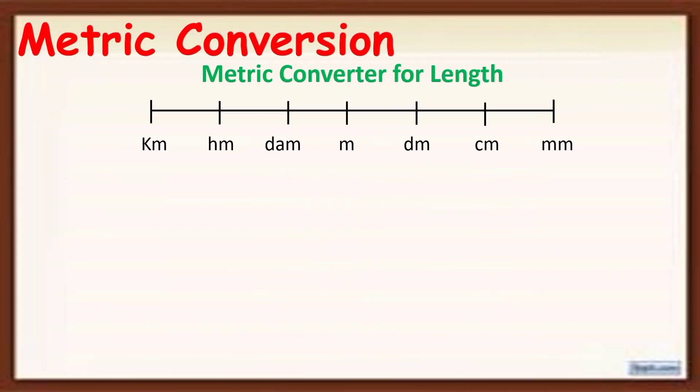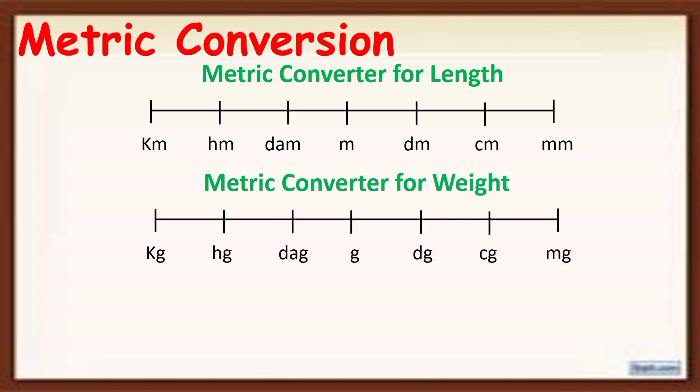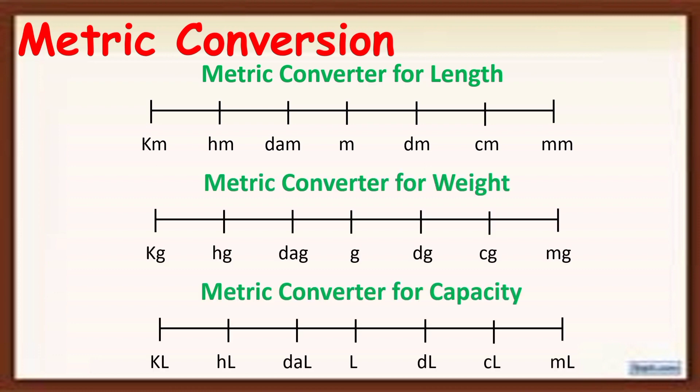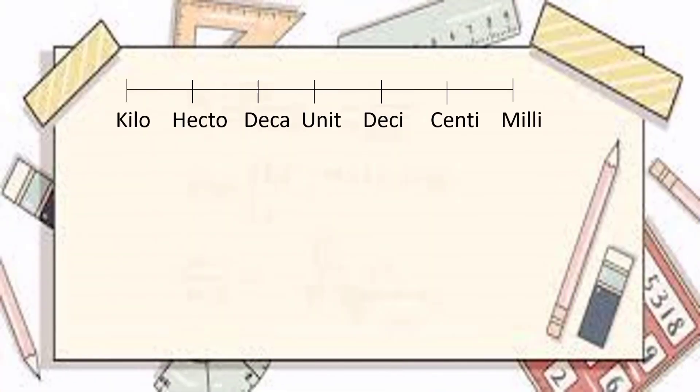Remember this metric conversion. We use this one for length, this one is for the weight, and this one is for the capacity. It is for kilo, hecto, deca, unit, deci, centi, and milli.